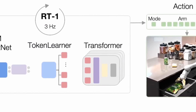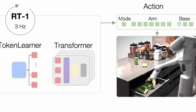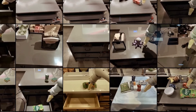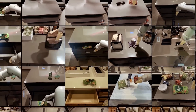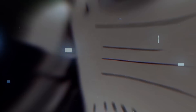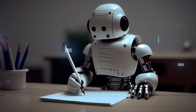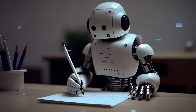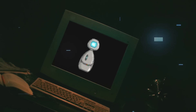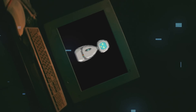The earlier model, RT1, could do simple tasks like picking up items, but was restricted to tasks it had seen before. RT2 is better than RT1 because it also learns from web data, which lets it do more versatile tasks and handle new situations. In essence, RT2 uses web information to learn in a way similar to humans, benefiting from the vast knowledge available online.